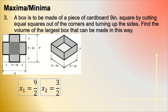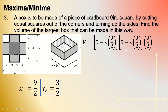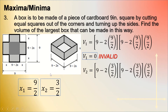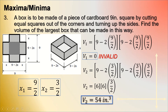Substituting x sub 1 equals 9/2 into the volume formula results in 0, which is invalid. Using x sub 2 equals 3/2: the volume equals 6 times 6 times 3/2, which equals 54 cubic inches. So the largest volume is 54 cubic inches, and x equals 3/2 is the applicable value.